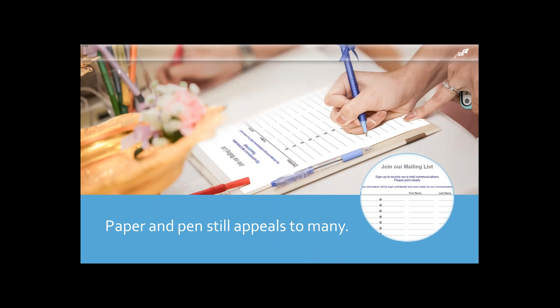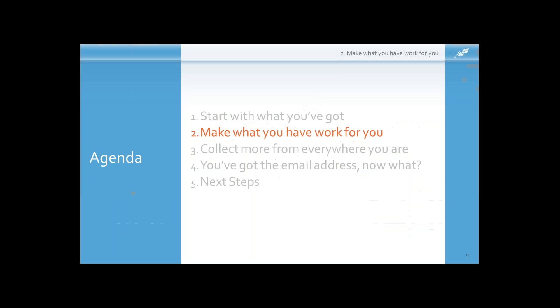Pen and paper still works just fine for collecting email addresses. If you have a business that allows you to leave a paper sign-up form somewhere, you can print these forms right through Constant Contact. The one thing you need to watch out for is handwriting — using pen and paper to collect email addresses can work against you if you can't read their handwriting. So definitely put a request on the page to write legibly to alert people with poor handwriting skills.